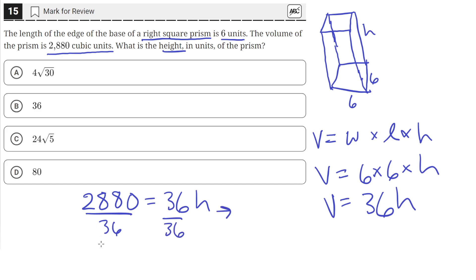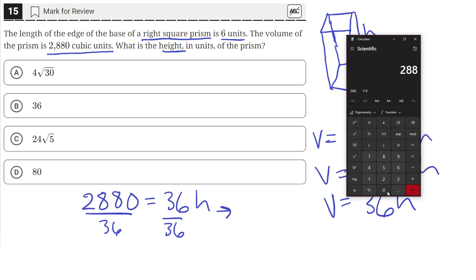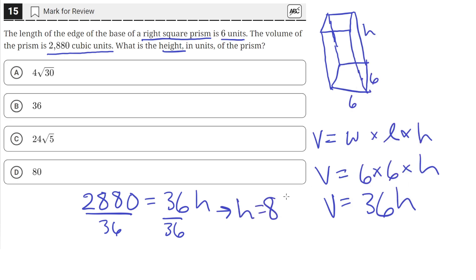So if we put that into our calculator, 2,880 divided by 36 is equal to 80. So h equals 80.